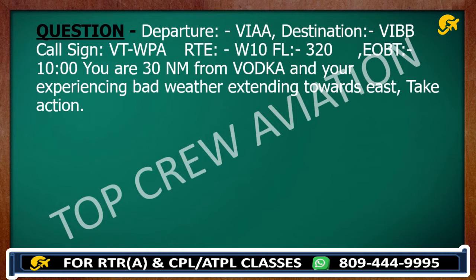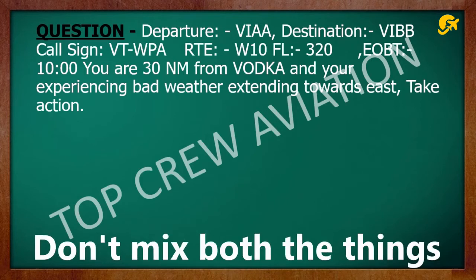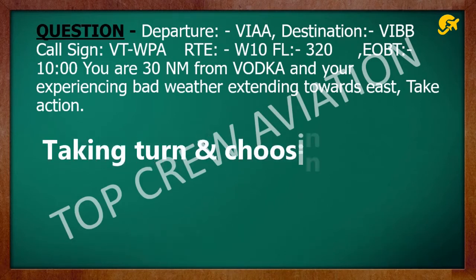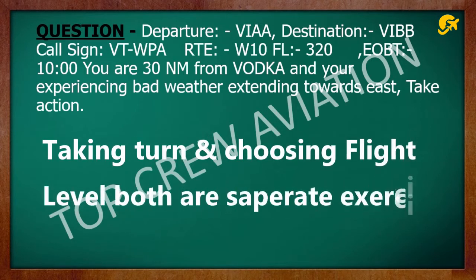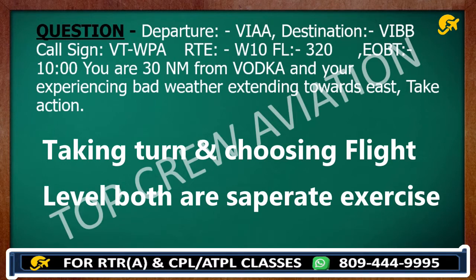This is how you will get questions in your exam on weather deviation. If weather is moving towards east, then we will turn towards west as discussed. But it has no relation with flight level — flight level is completely depending on your current track. Don't mix both things. Taking a turn and choosing a flight level are both separate exercises. 90% of students mix both things — I hope you will not make the same mistake.